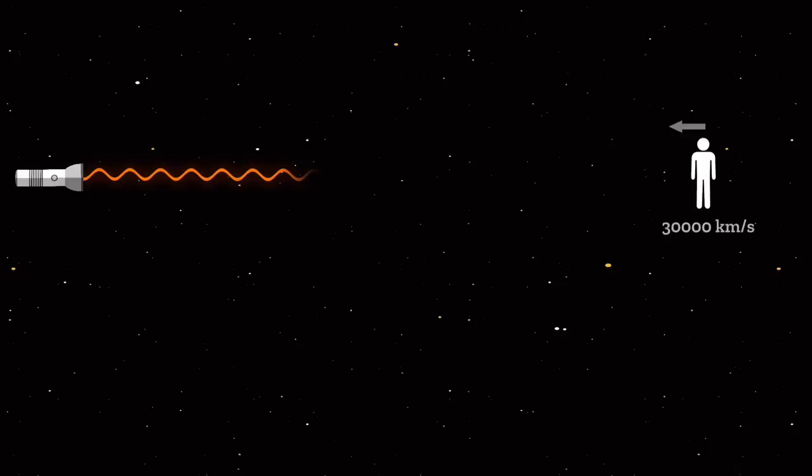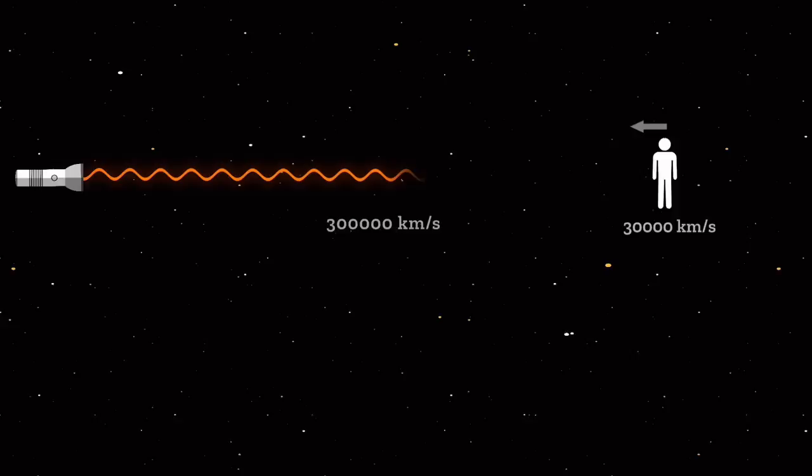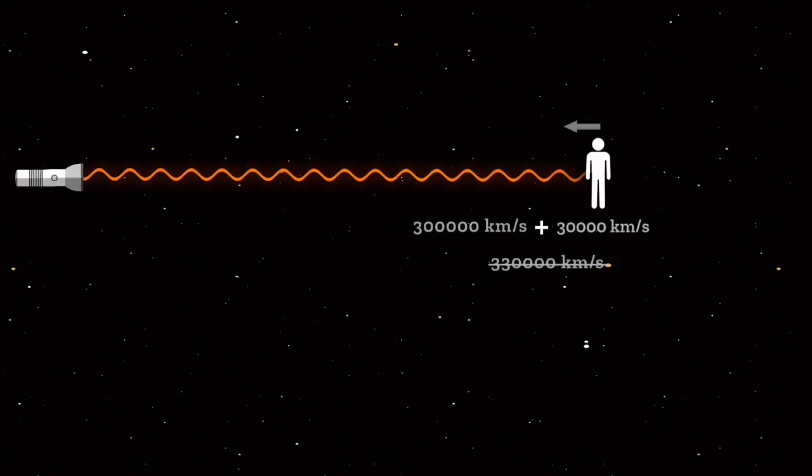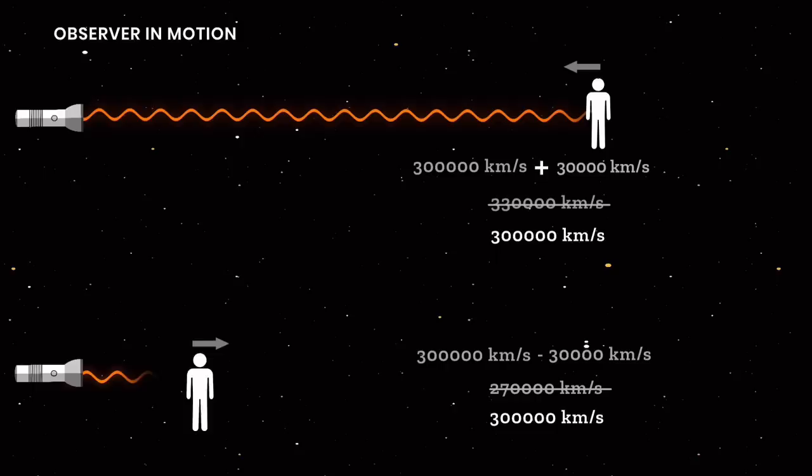But think about the constant nature of light. You are moving 30,000 kilometers per second toward the light beam. Light travels at 300,000 kilometers per second and you travel at 30,000 kilometers per second. The constant nature of the speed of light means you would not measure light's speed as 330,000 kilometers per second — it would still be 300,000 kilometers per second. Given all we know about relative motion, how can light speed be the same for all observers even when they are in motion?